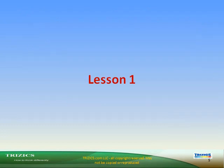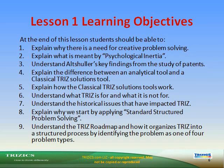Lesson 1 learning objectives: At the end of this lesson, students should be able to explain why there is a need for creative problem solving; explain what is meant by psychological inertia; understand Altshuller's key findings from the study of patents; explain the difference between an analytical tool and a classical TRIZ solutions tool; explain how classical TRIZ solution tools work; understand what TRIZ is for and what it is not for; understand the historical issues that have impacted TRIZ; explain why we start applying standard structured problem solving; and understand the TRIZ roadmap and how it organizes TRIZ into a structured process by identifying the problem as one of four problem types.